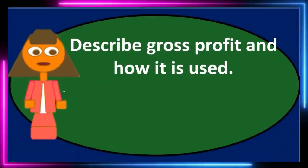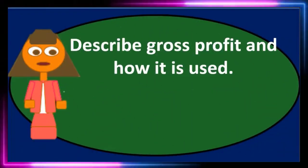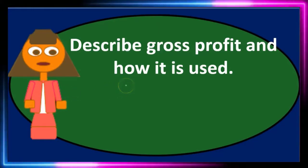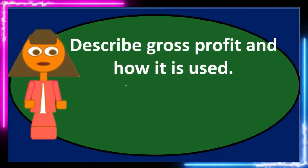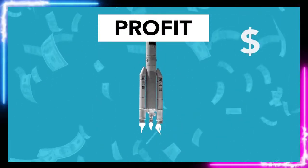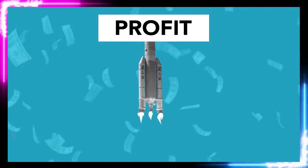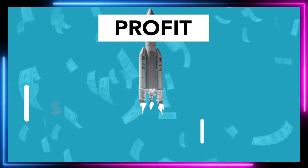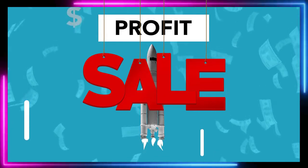In this discussion, we will describe gross profit and how it is used. Gross profit is a term used for a merchandising company and is included in a multi-step income statement. We don't see it for a service company or in a single-step income statement. It is calculated as sales less the cost of goods sold, giving us the gross profit.